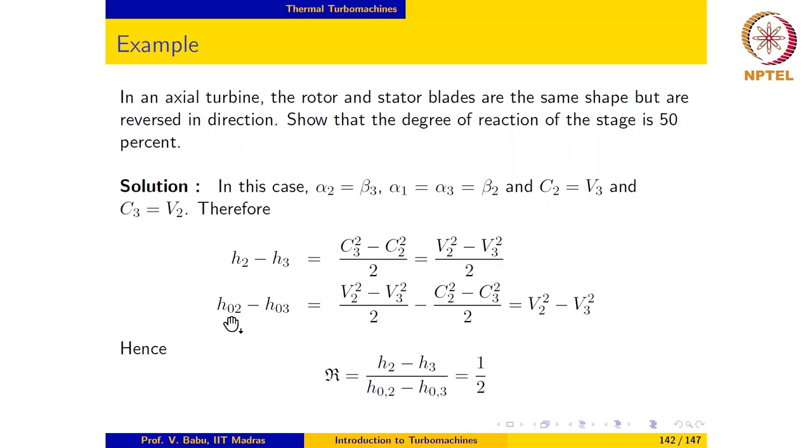Now the change in stagnation enthalpy across the rotor, h02 minus h03, is nothing but the specific work, and we may write it using the Euler turbine equation after setting U2 equal to U3 because it's an axial machine. If we substitute again for the relative velocities, we get the change in specific stagnation enthalpy to be equal to V2 squared minus V3 squared.